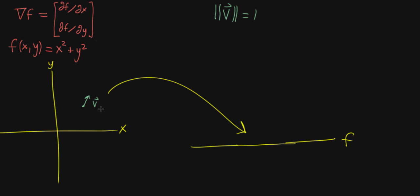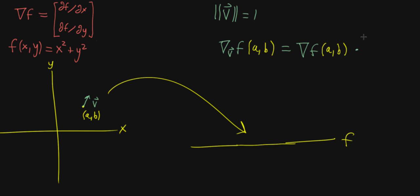We know now, having learned about the directional derivative, that you can tell the rate at which the function changes as you move in this direction by taking the directional derivative of your function at the point — let's call it (a, b). The way that you do that is by dotting the gradient of f, evaluated at that point (a, b), together with whatever the vector is — in this case we're thinking of v as a unit vector.